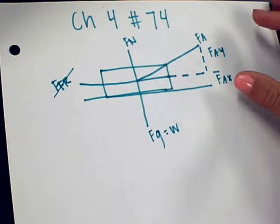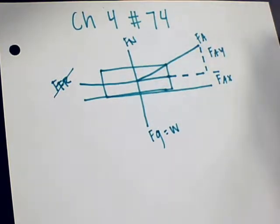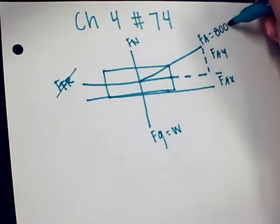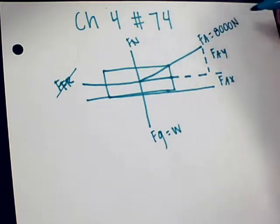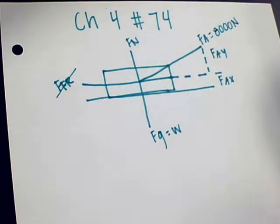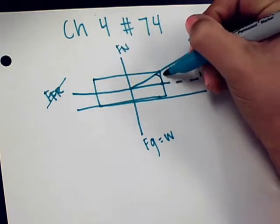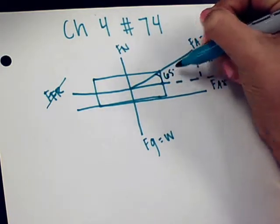So the problem says: on an airplane's takeoff, the combined action of the air around the engines and the wings of an airplane exerts an 8,000 newton force on the plane. So that's our applied force. That force is directed upward at an angle of 65 degrees above the horizontal, so this angle is going to be 65 degrees.